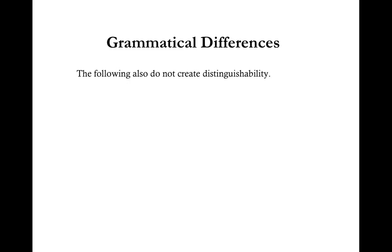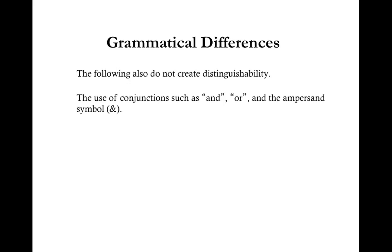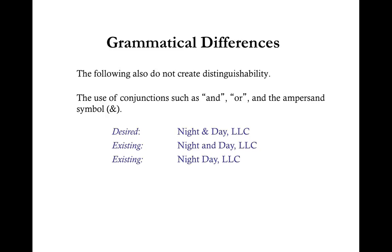The use of conjunctions such as and, or, and the ampersand symbol also do not create distinguishability. For example, if your desired LLC name is Night & Day LLC with the ampersand symbol, but during your search you find Night and Day LLC or Night Day LLC, both of these examples are too similar and your desired LLC name is not distinguishable and therefore not available for use. An example of an alternative name would be Moon and Sunshine LLC.